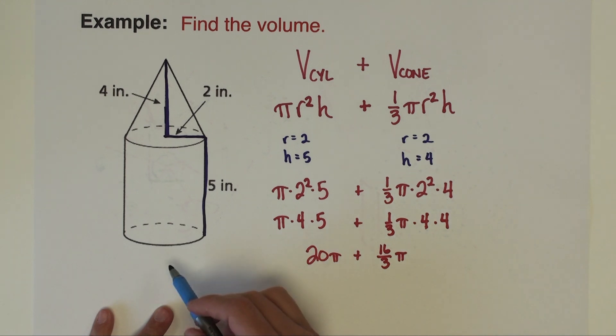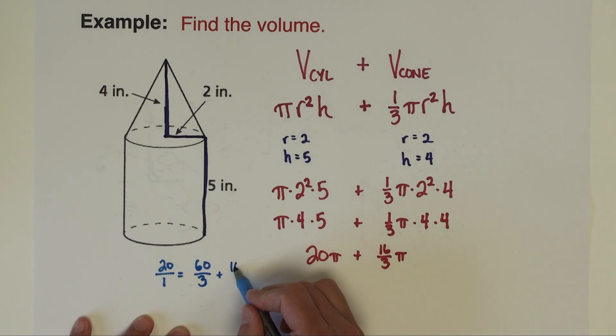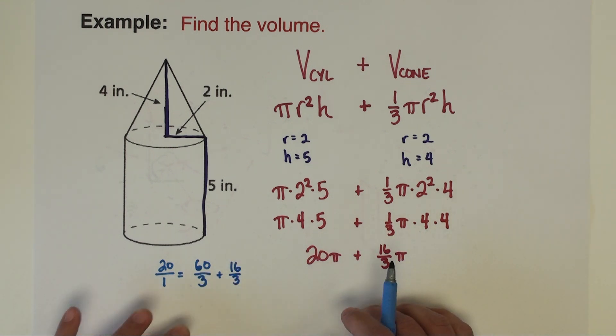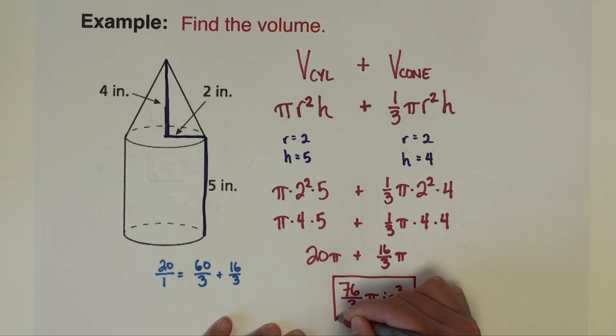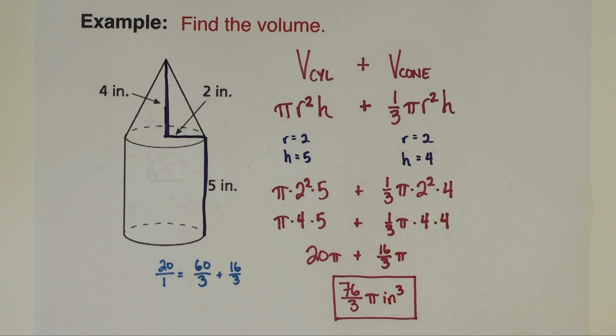Now I do need to put these together into a single value, a single term. Let me do that. 20 over 1 is the same as 60 over 3. That's my equivalent fraction. And if I add 16 over 3 to 60 over 3, then we would get 76 thirds pi. We need to put units on that, so our units are going to be inches cubed. And there's our total combined volume of the cylinder and the cone.